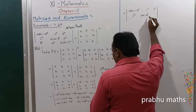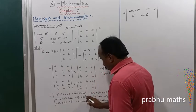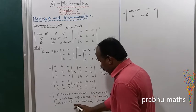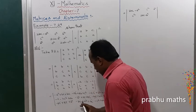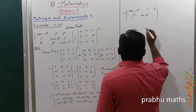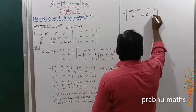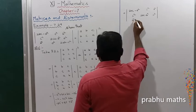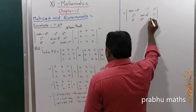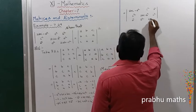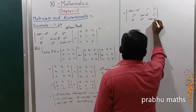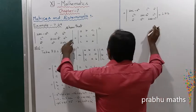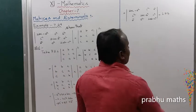After further cancellations, the remaining values are: a square, b square, a square, and 2ab minus c square. This is equal to the LHS. We get the solution, completing Example 7.29.